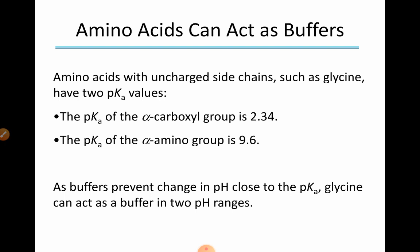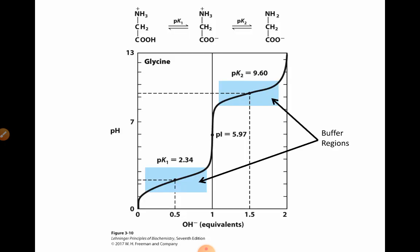Amino acids can act as buffers. Amino acids with uncharged side chains, such as glycine, have two pKa values: 2.34 for the carboxyl group and 9.6 for the amino group. Because a buffer prevents change in pH close to the pKa, glycine can act as a buffer in two pH ranges. The isoelectric pH of glycine is 5.97, where it is neutral.